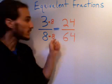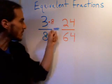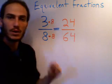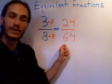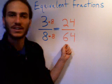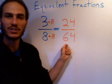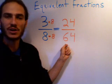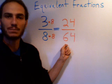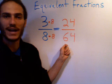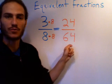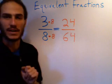We now know because we use the exact same number to multiply top and bottom that 3 eighths is exactly equivalent to 24 sixty-fourths. So that's how you make an equivalent fraction. Tune in to the next video where we're going to look at simplifying fractions, and after that we'll look at adding and subtracting unlike fractions, that is fractions with different denominators.